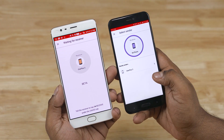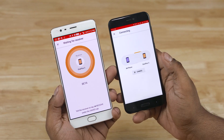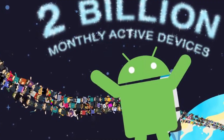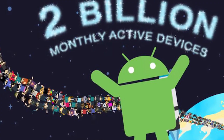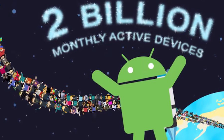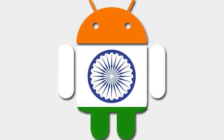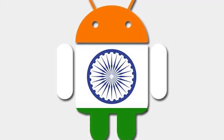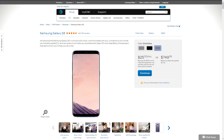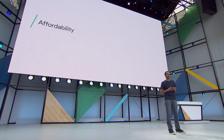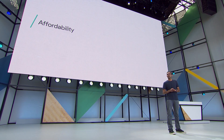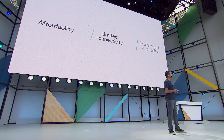Google also announced that Android is currently running on 2 billion devices and that there are a ton more Android users in markets like India these days. Given a lack of a contract system in these markets, most people end up buying low to mid-end phones. Android Go is aimed to help enhance that Android user experience on these low-end phones.